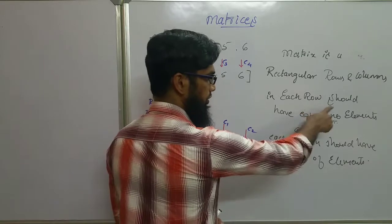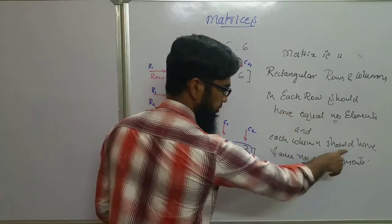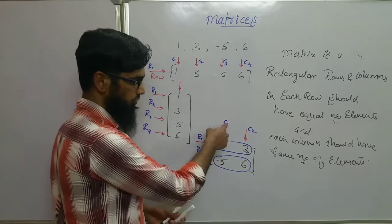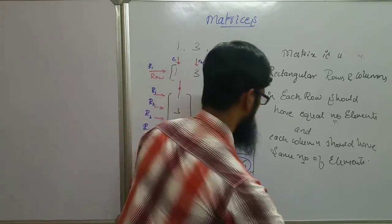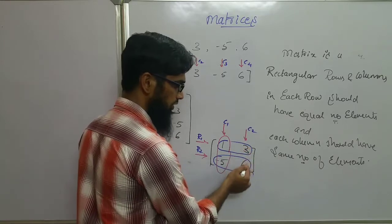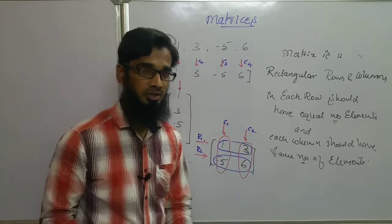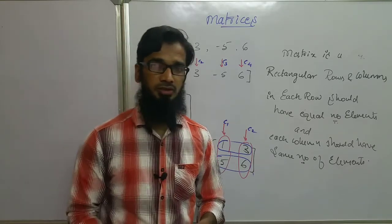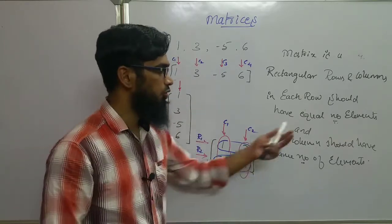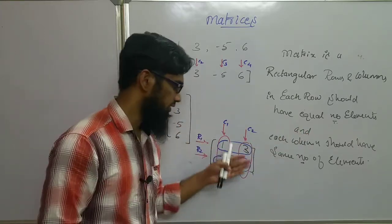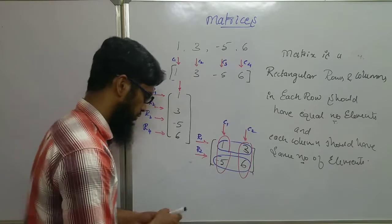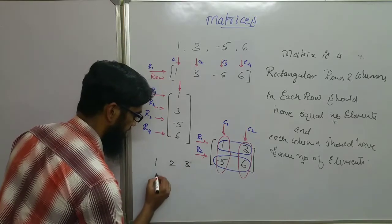Now for the columns: column 1 has two elements and column 2 also has two elements — so the condition is satisfied. A matrix is a rectangular arrangement of rows and columns in which each row has an equal number of elements and each column also has an equal number of elements.